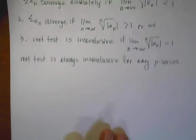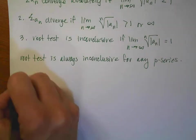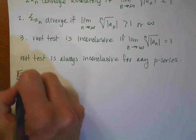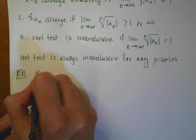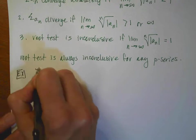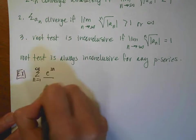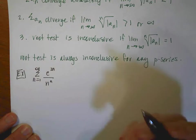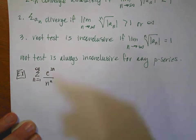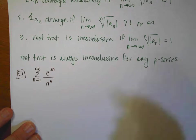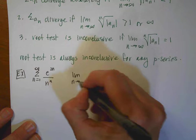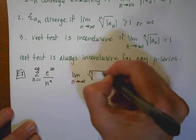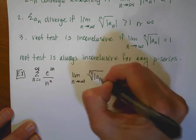So since that information is out of the way, let's start with some examples. For our first example, the directions are to determine the convergence or divergence. We have the sum from n equals 1 to infinity of e to the 2n over n to the n. Because they have all those lovely nth powers going on, I'm going to try the root test, which says the limit as n approaches infinity of the nth root of the absolute value.